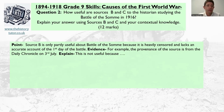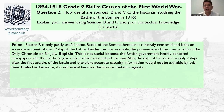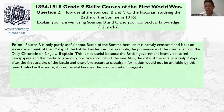Now I need to explain a little bit about censorship and the events, and get some knowledge in. Knowledge and facts are what's needed to back up your idea. Here's what I've gone for: 'This is not useful because the British government heavily censored newspapers and the media to give only positive accounts of war. Also, the date of the article is only two days after the first attack of the battle, and therefore accurate casualty figures and information would not be available by this time.' I've given lots of explanation about the government and censorship and how they're trying to control public opinion. I could talk about casualty figures when I discuss the content.